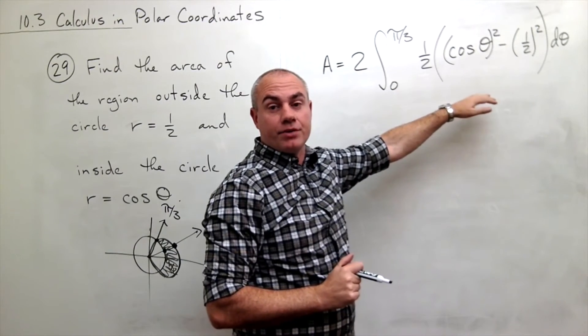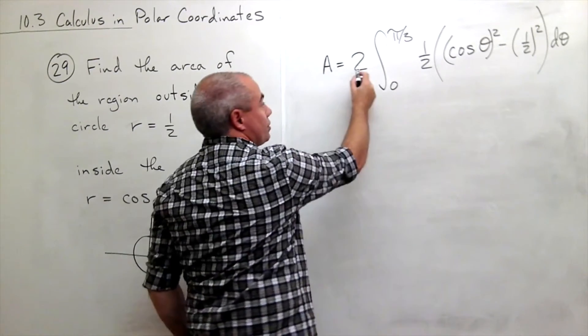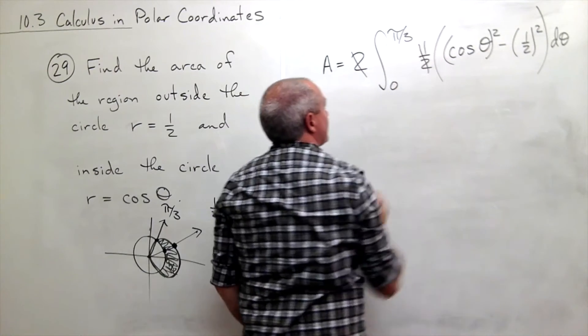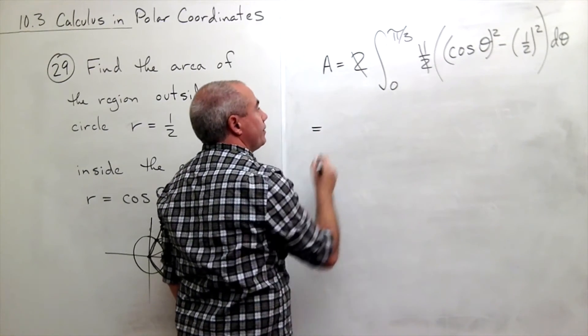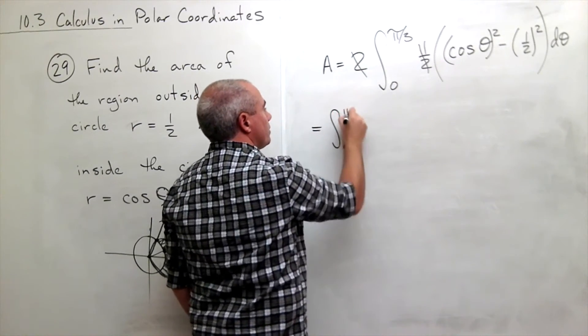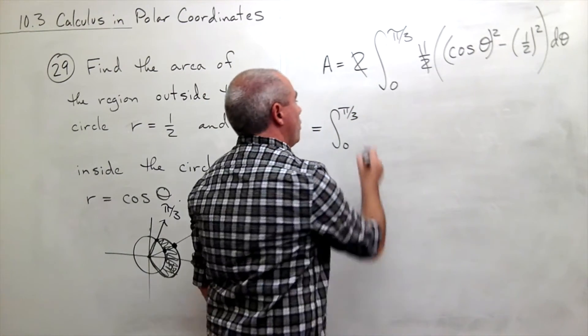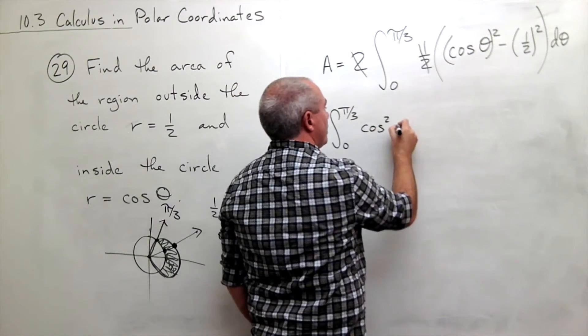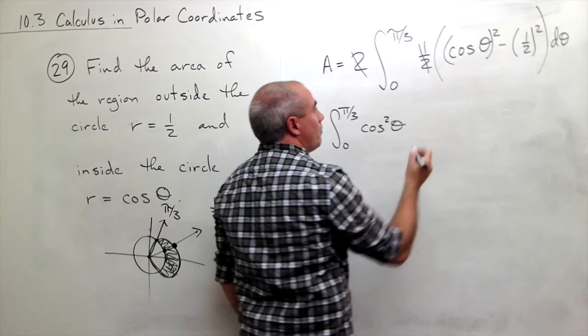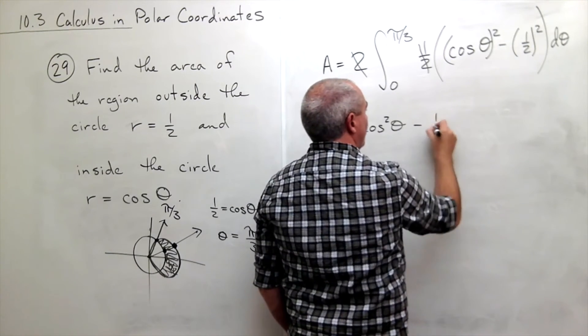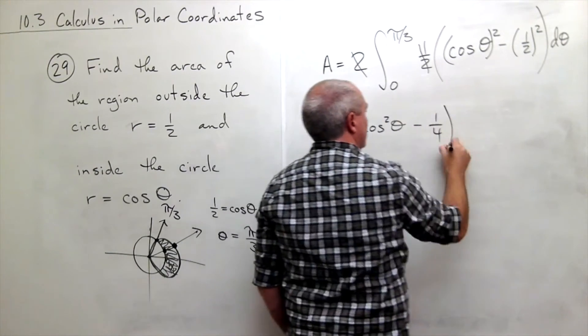Now let's actually compute it. So I have a two, I have a one-half, those cancel. And I'm left with the integral from zero to pi over three of cosine squared theta minus one-fourth d theta.